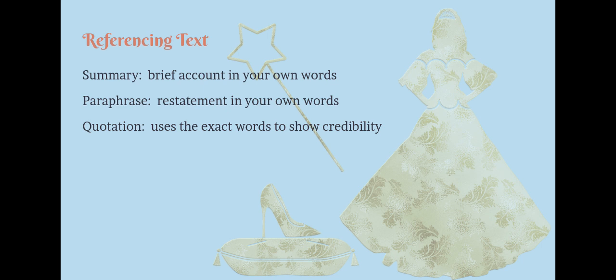A summary is a brief account in your own words of what happened in a section of text or the whole text. We summarize when we want to draw out specific points and omit unnecessary information. Omit means to leave out.